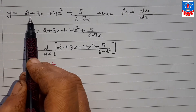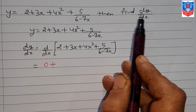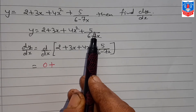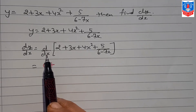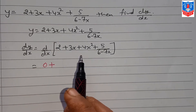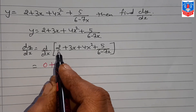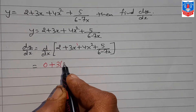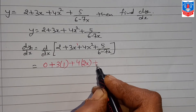Next question: y = 2 + 3x + 4x² + 5/(6 - 7x), find dy/dx. In this sum, you can see three polynomial values plus the last value given as a fraction. First, we write d/dx of all the values. We can directly find derivatives of the first three terms: the constant 2 gives 0, 3x gives 3, and 4x² gives 8x.